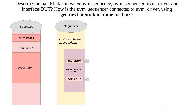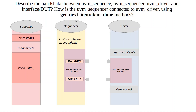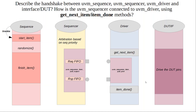On the sequencer side you have the export port, and on the driver side you have the get_next_item and item_done method combination. The first thing is to invoke the blocking call within the sequence called start_item. Once that happens, the sequencer is informed and you are waiting for a grant. Once the sequencer grants you permission, you can perform the randomization.